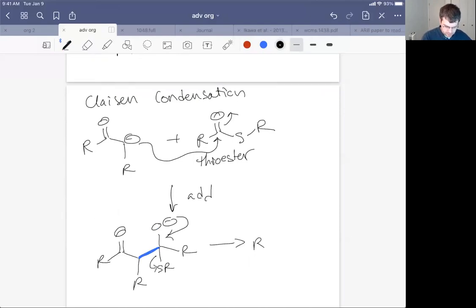Now what you get is instead of a beta hydroxy carbonyl, which is what you obtain from an aldol reaction, we're going to instead get a beta keto carbonyl or a beta carbonyl carbonyl. We put another carbonyl in the system, beta to our original carbonyl that was involved in the enolate.